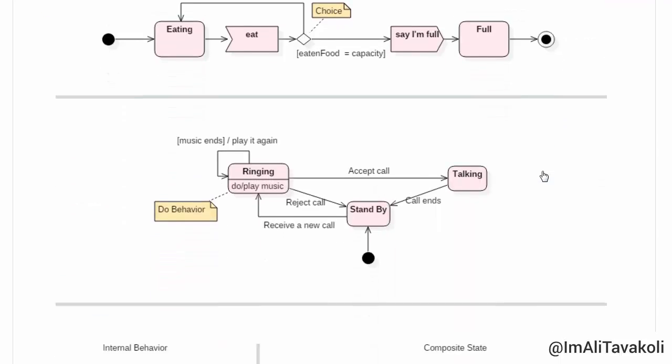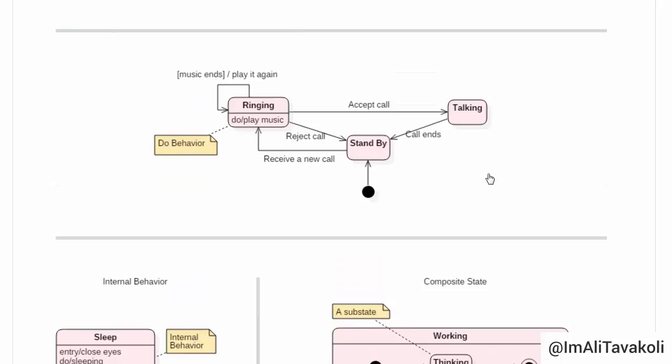Now, let's take a look at another example. Which we are going to demonstrate different states of a cell phone. And everything starts from here. Our first state is this standby state. And if we receive a new call, we will be transited to this state, ringing state,